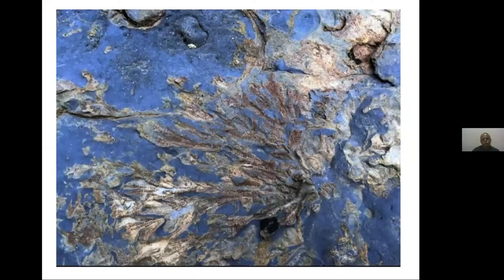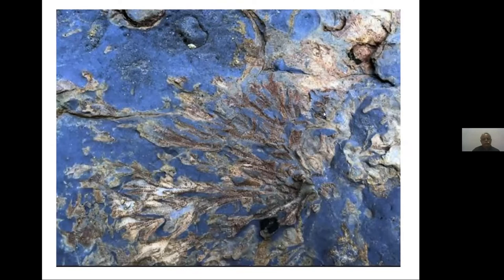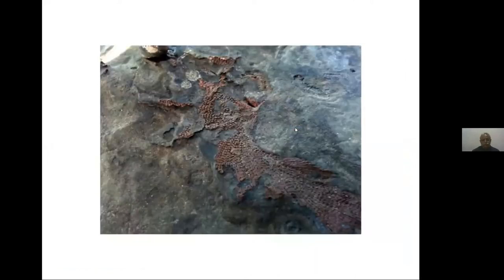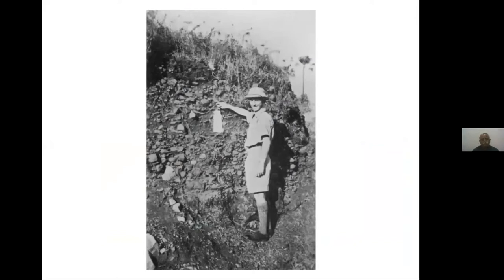One more secret that Mumbaikars don't know: there is a submerged forest beneath the sea very near to the Mumbai coast. When construction for Princess Dock began, geologists discovered a total forest of Acacia — called babhul in Marathi and Hindi — submerged completely 30 meters below the Mumbai sea. This is a representational photograph of how a submerged forest looks.